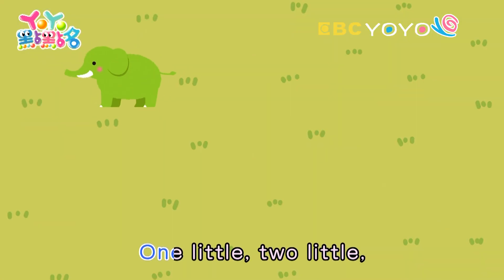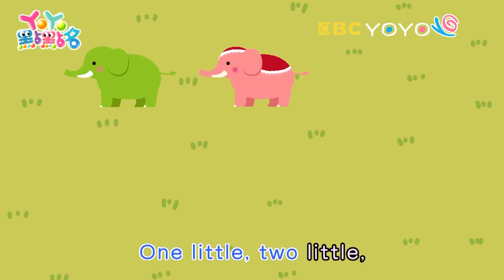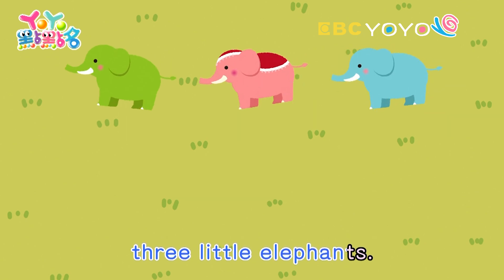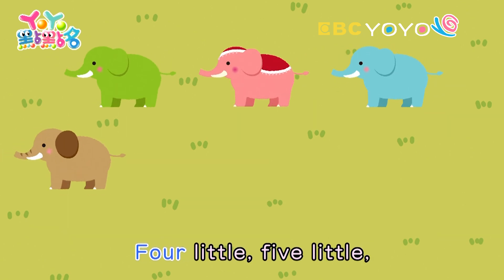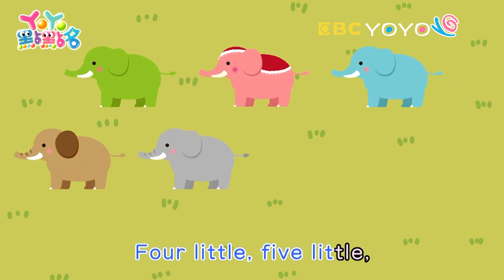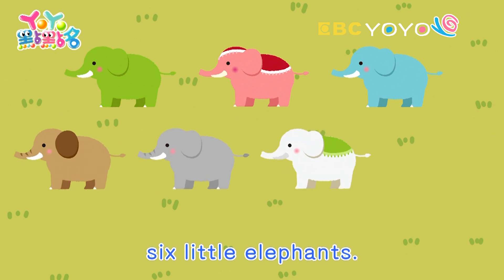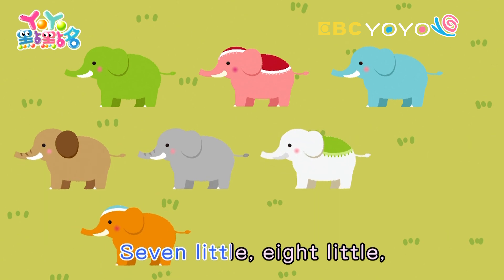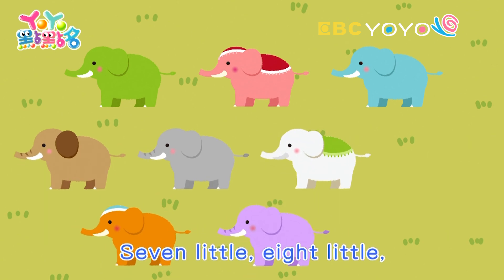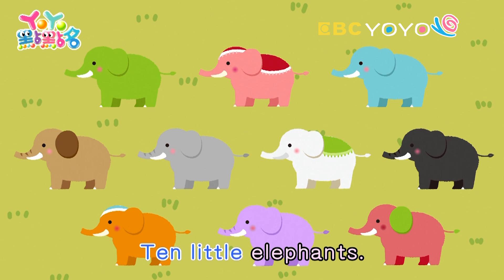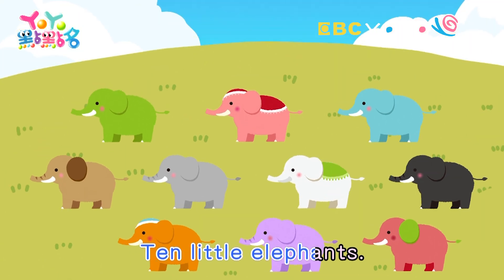One little, two little, three little elephants. Four little, five little, six little elephants. Seven little, eight little, nine little elephants. Ten little elephants.